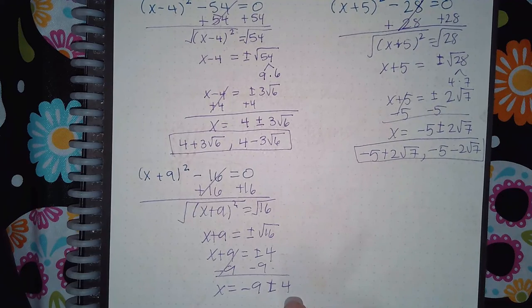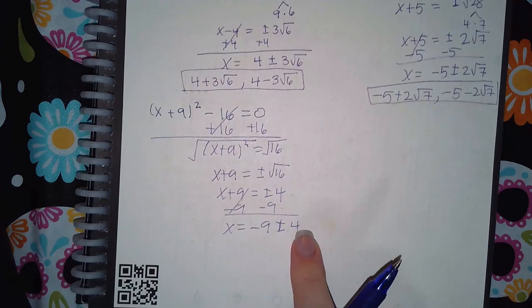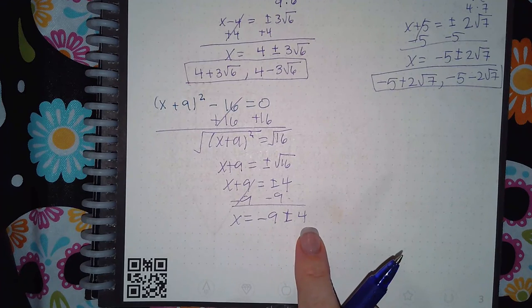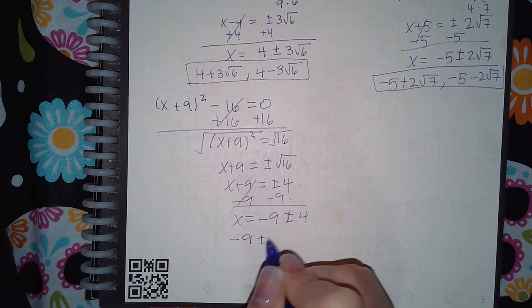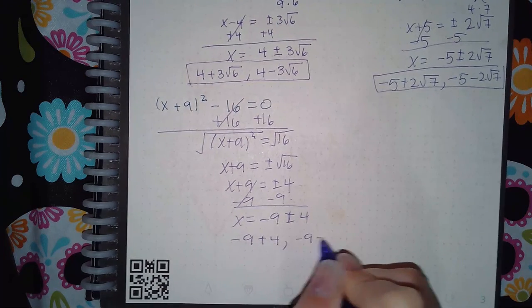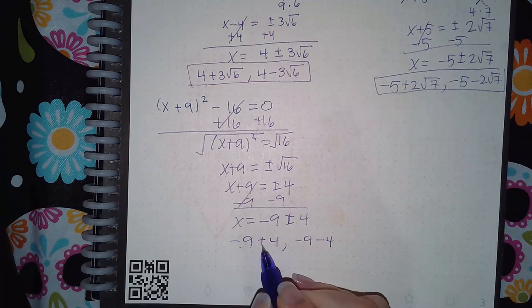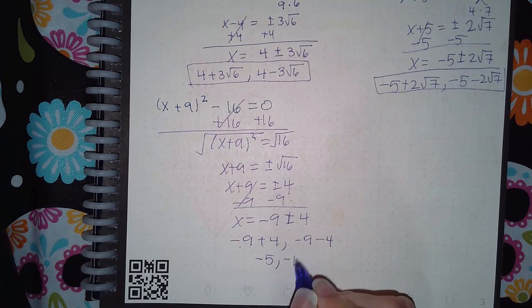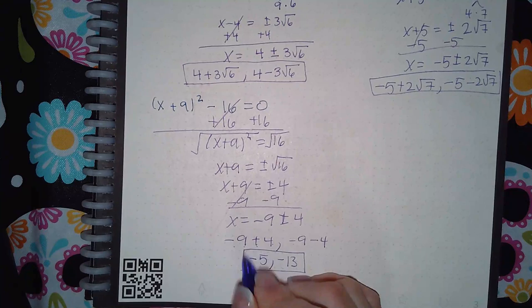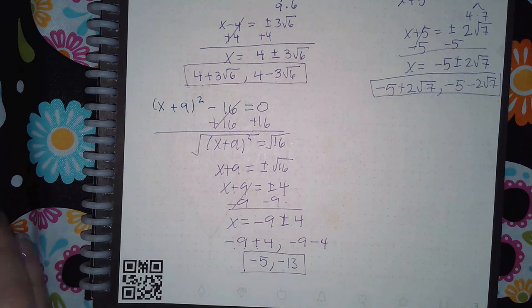Now this one does not have a radical next to it. So these are like terms. And since they are like terms, we can go ahead and add and subtract those. So -9 + 4 is -5. -9 - 4 is -13. And so the two solutions are -5 and -13.